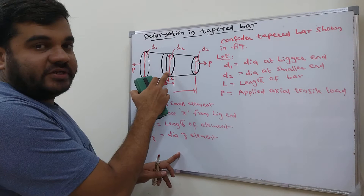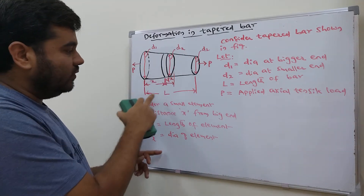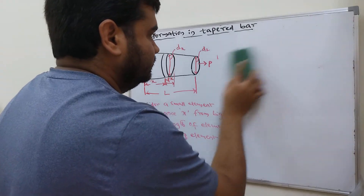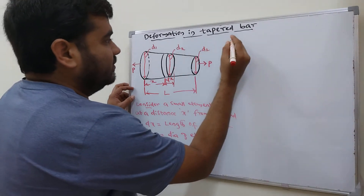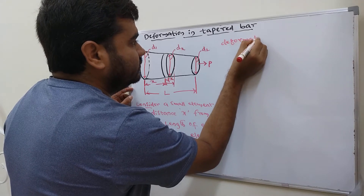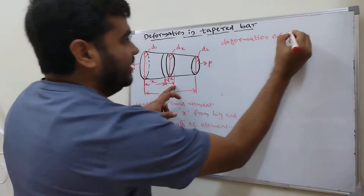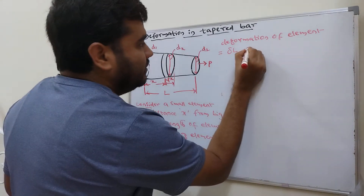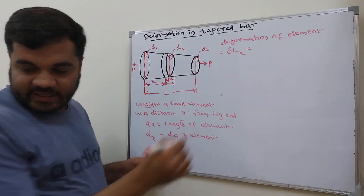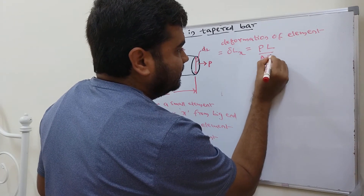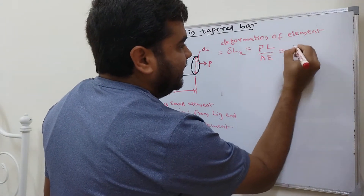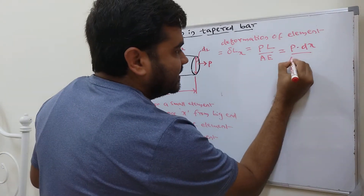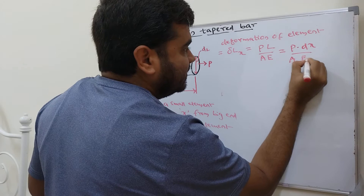We will first find out the deformation of this small element, then integrate from 0 to L to get the deformation of the whole tapered bar. The deformation of the element is: δl_x = P·dx / (A_x · E), using the basic formula PL/AE. We call this Equation A.